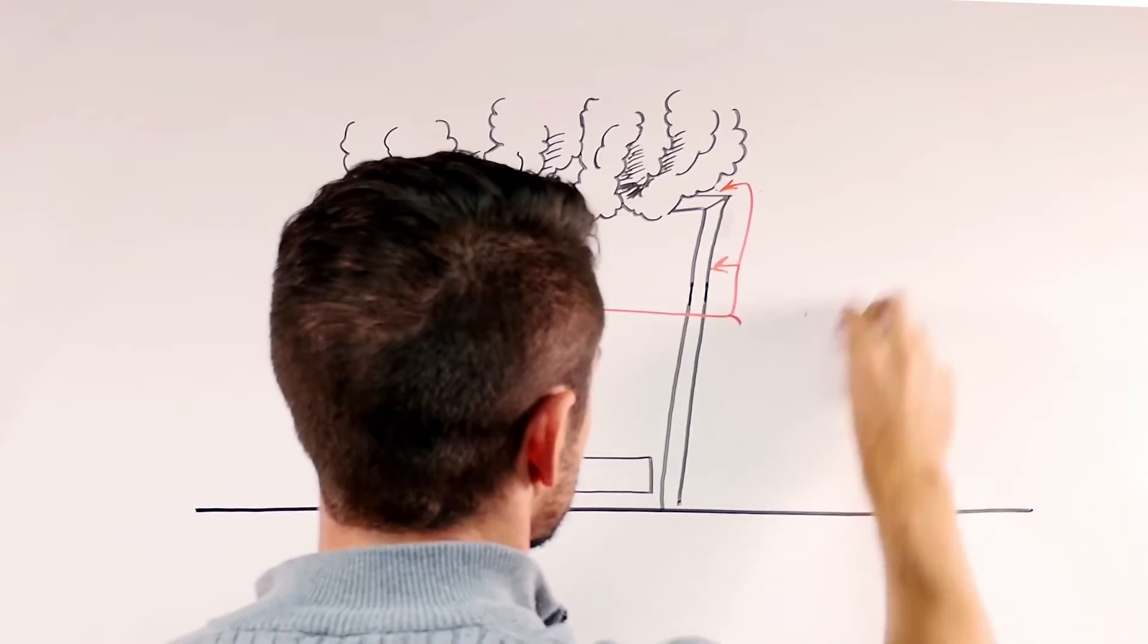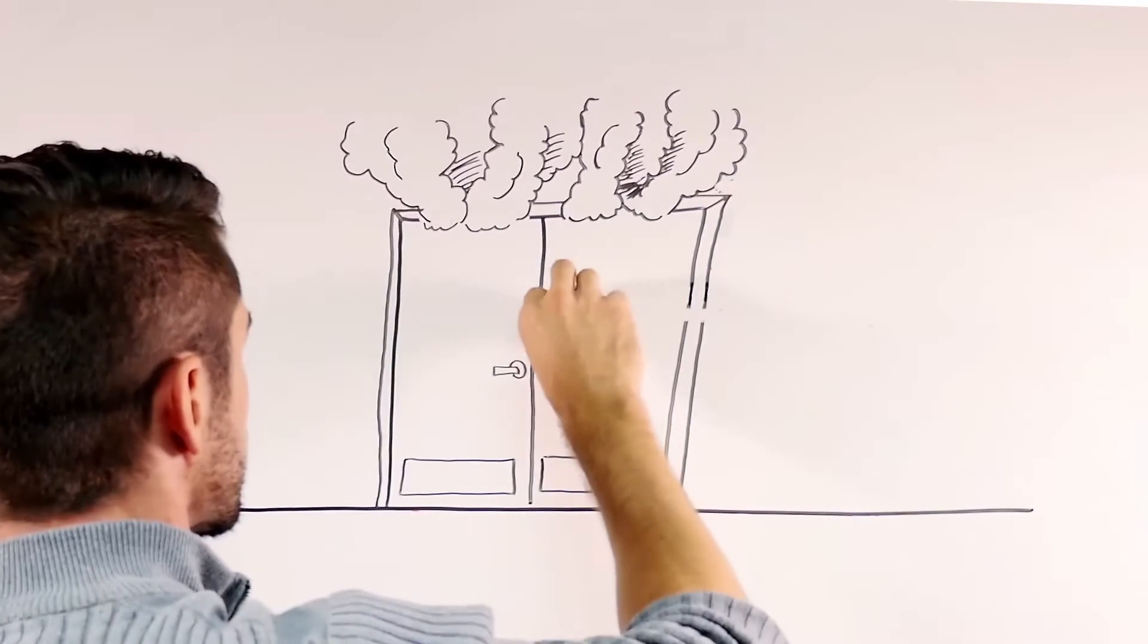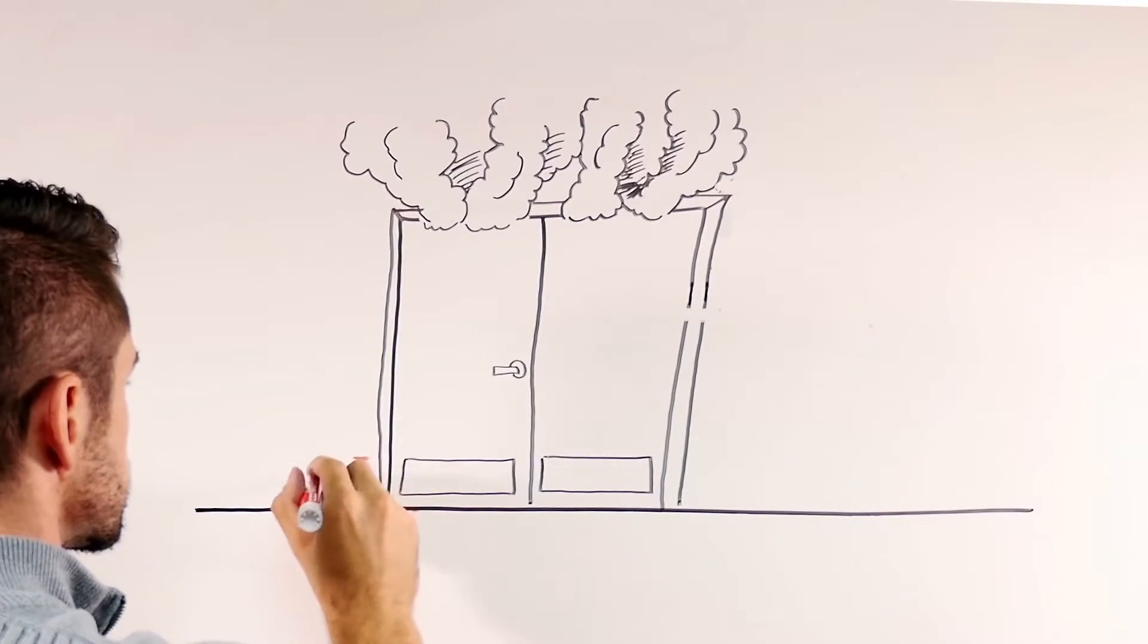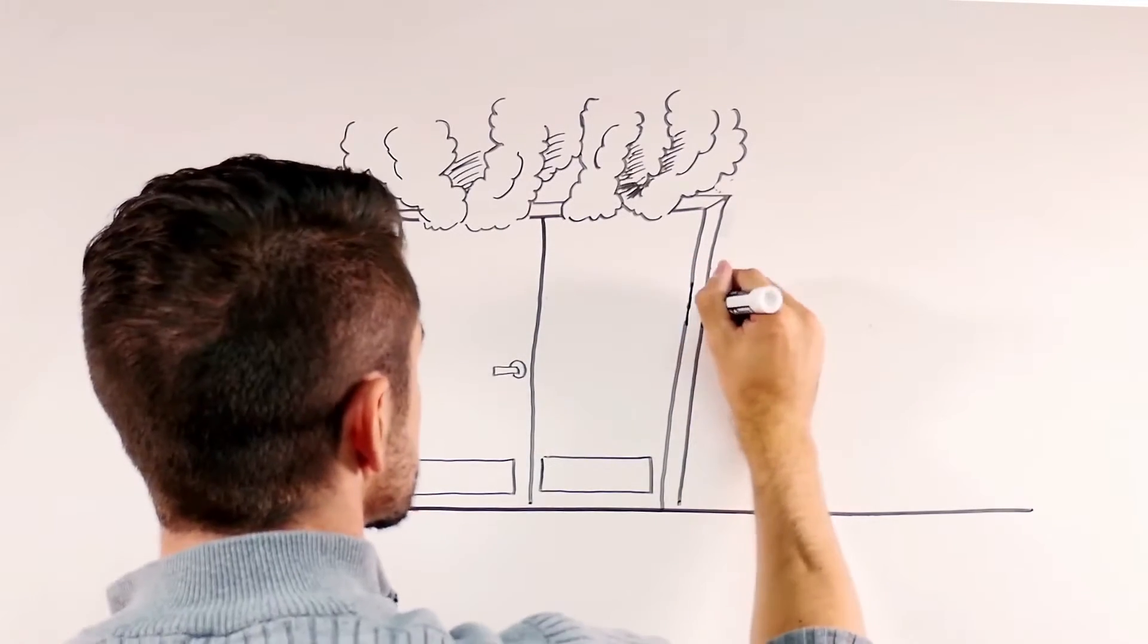Protection plates on fire doors can be installed on the bottom sixteen inches of a fire door, but larger plates could affect the performance of the door during a fire. Plates that extend above the sixteen-inch area must have a label indicating that they are acceptable for use on a fire door.